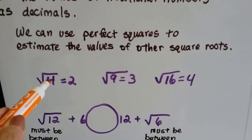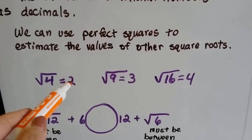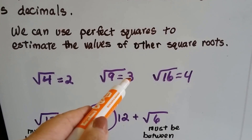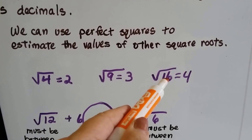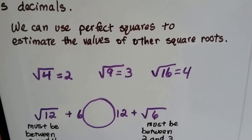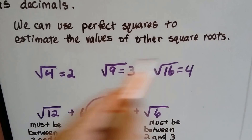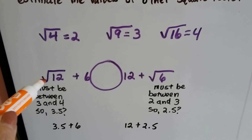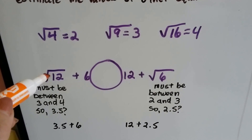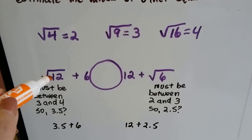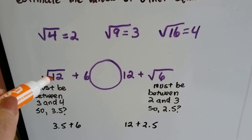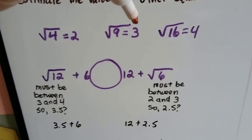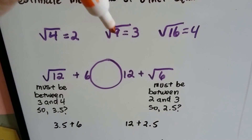We know the square root of 4 is 2, because 2 times 2 is 4. The square root of 9 is 3 because 3 times 3 is 9. And the square root of 16 is 4 because 4 times 4 is 16. These are perfect squares. We can use these to help us with ones that aren't perfect. So the square root of 12 is going to have to be in between the square root of 9 and the square root of 16.